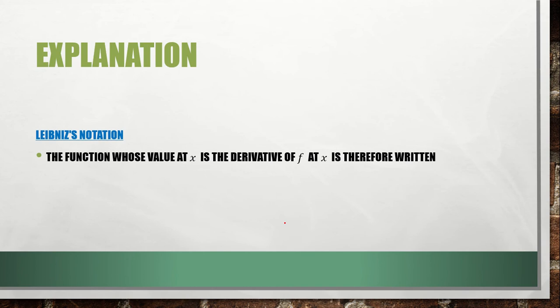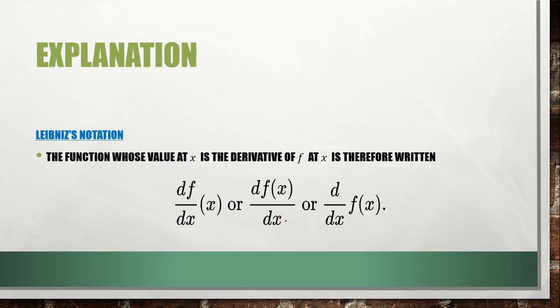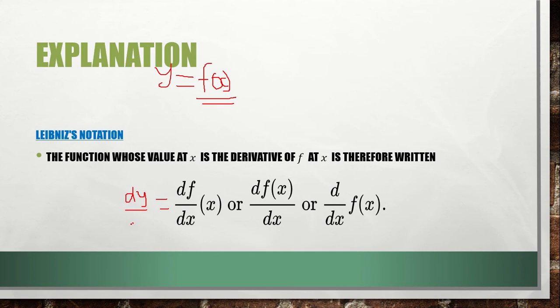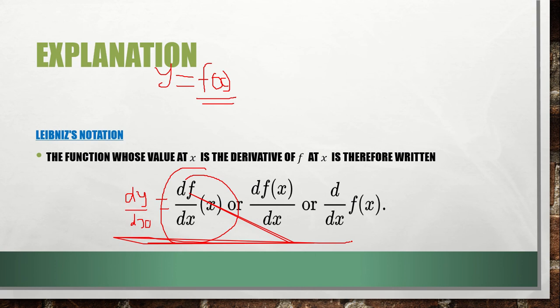The function whose value at x is the derivative of f at x is written as df over dx. If we note it as f(x) instead of y, we differentiate and use df(x) over dx, which simplifies further. This is also similar to dy over dx, since y is a function of x. That is basically what we have as Leibniz notation.